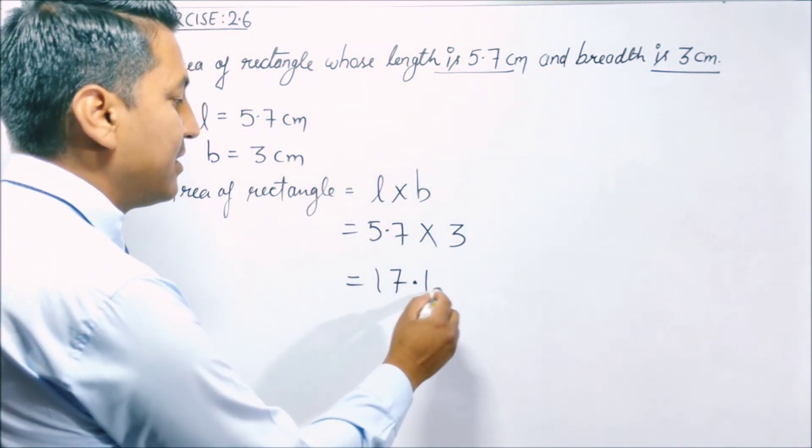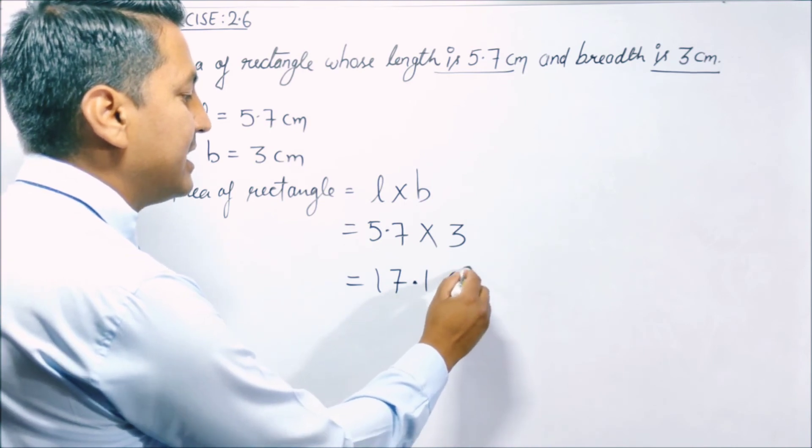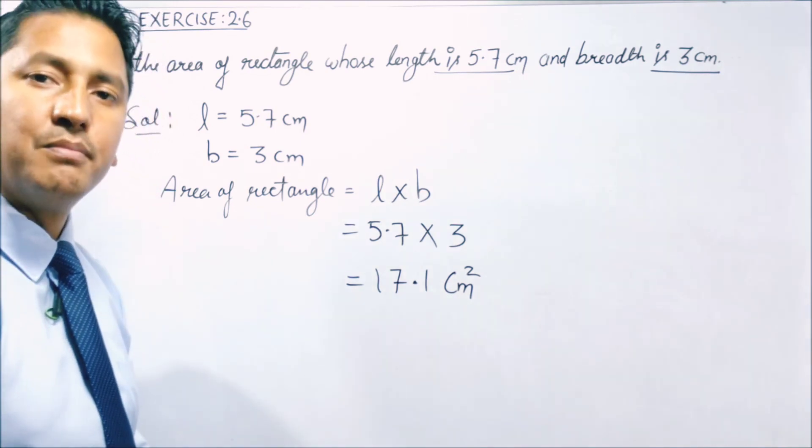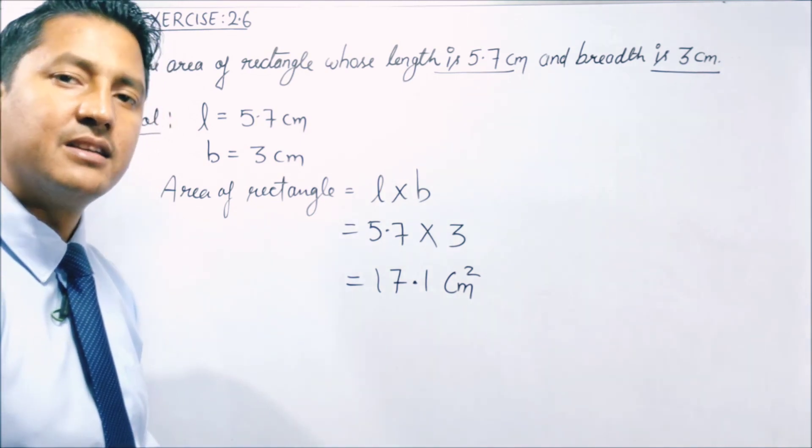क्योंकि यह area है तो centimeter square हो जाएगा. तो area of rectangle आपका आ गया 17.1 centimeter square.